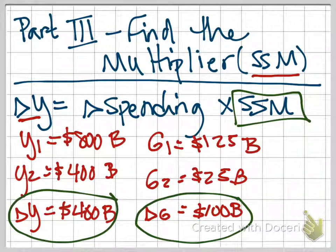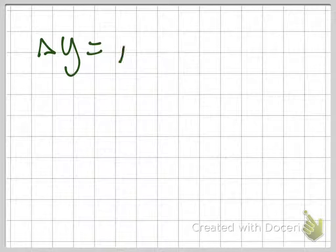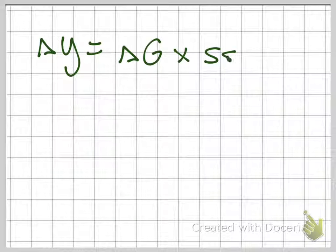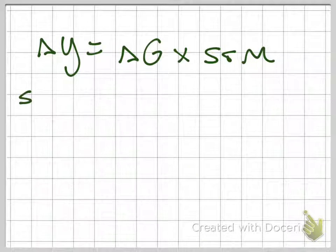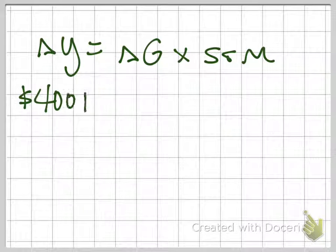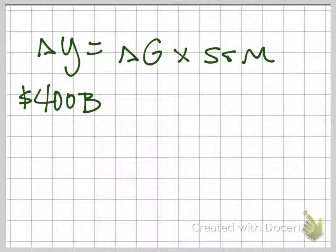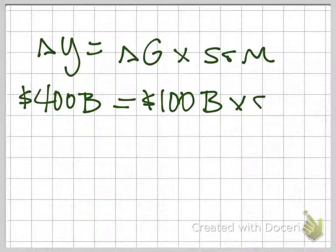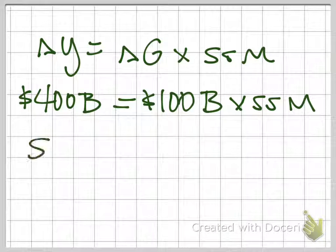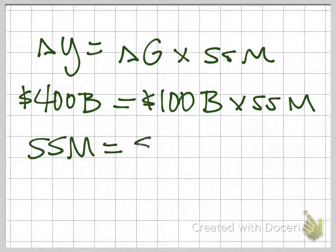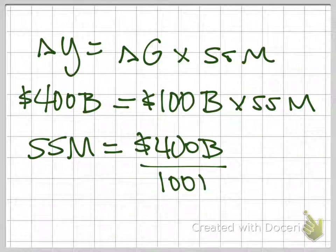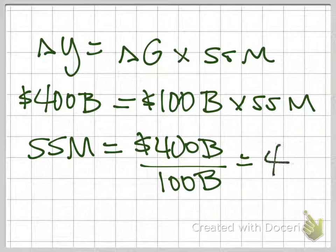Our equation here is delta Y equals a change in spending, in this case government purchases, times the multiplier. We found the change in real GDP demanded was $400 billion. The change in government purchases was $100 billion. And so using this to solve, we'll see that our multiplier equals $400 billion divided by $100 billion, or we have a multiplier of four.